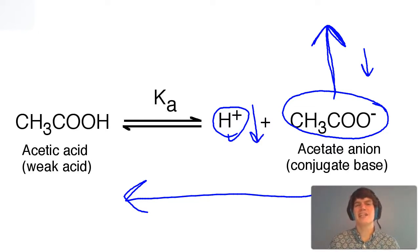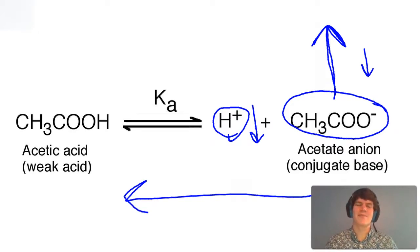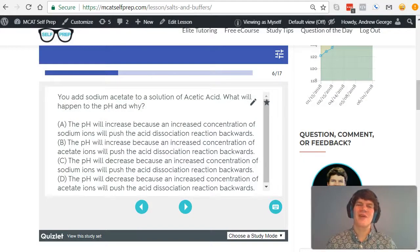And as we know, as the H-plus concentration decreases, the pH increases. Therefore, adding sodium acetate to our solution is going to cause the pH to increase because of the increased concentration of acetate ions.